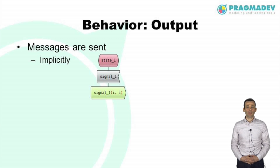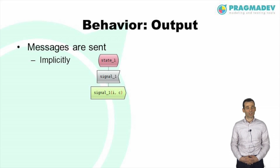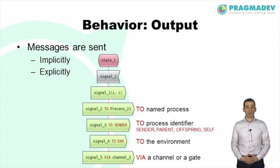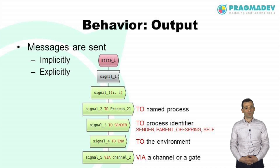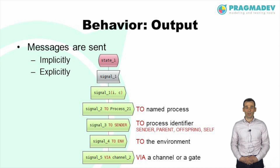A process can send messages to another based on the paths defined in the structure. If a single path exists in the structure for a given message, then its name and parameters are enough to address the receiver process. However, the receiver of a message can be set explicitly in the output symbol, which is useful when there are several possible paths. A message can be sent to a named process, to a process identifier, to the environment, or via a channel or a gate. The process identifier can be the sender of the message that triggered the current transition, the process that created the current instance, a process instance created by the current process, or the process itself.